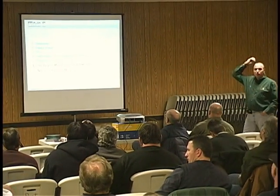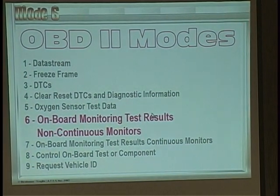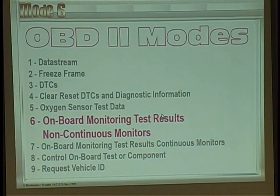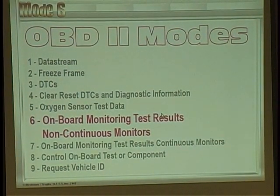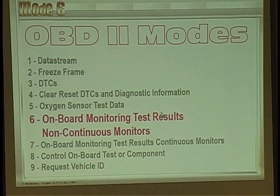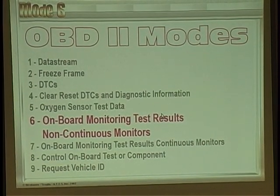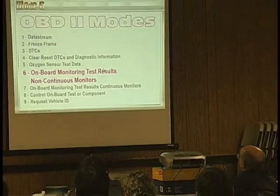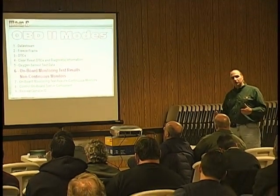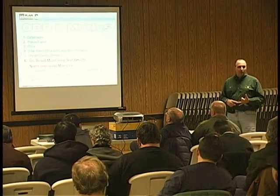Here are the 9 different modes of OBD2: data stream, freeze frame — you're all familiar with these, right? These are things you see when you plug your scan tool in. Diagnostic trouble codes, clearing and resetting DTCs, oxygen sensor testing — the one that gets aggravated. You go to the oxygen sensor test on your scan tool and what do most of you see? There's nothing in a lot of cases, but starting in 2008 model year cars there will be information in there. You should always look and check it; sometimes this could be a function of the vehicle's DTC output or it could be your scan tool not making the right query.